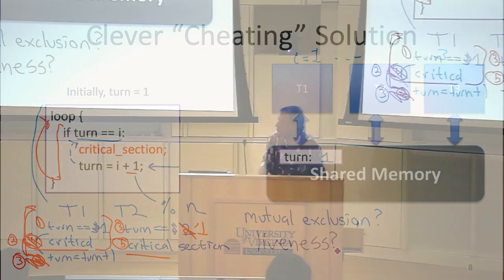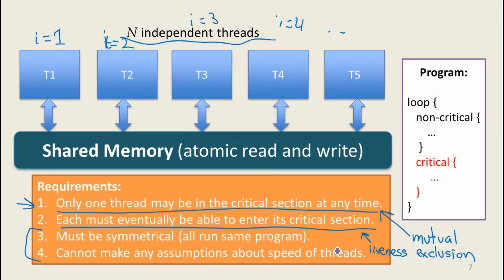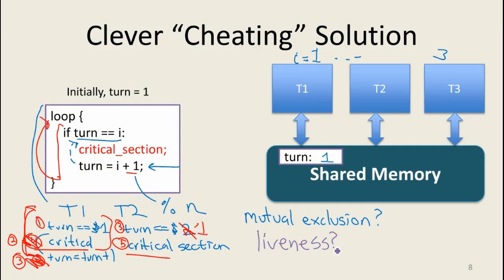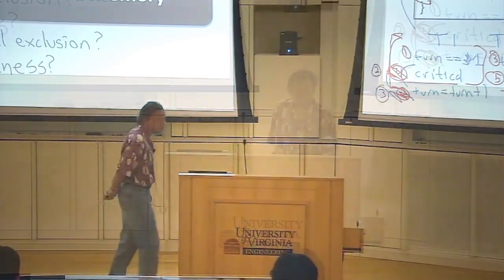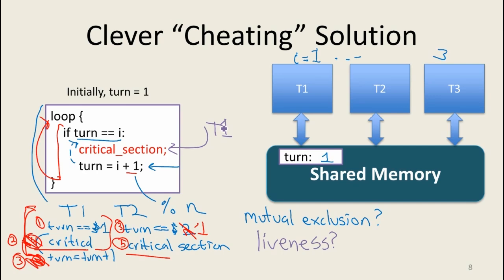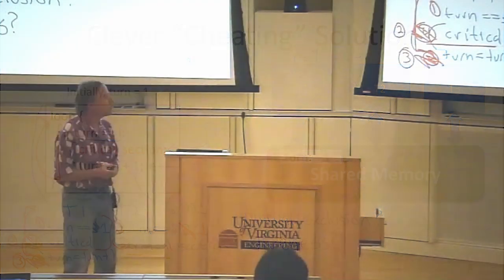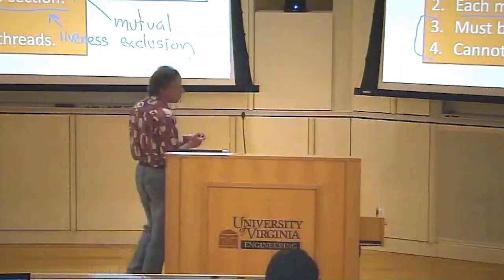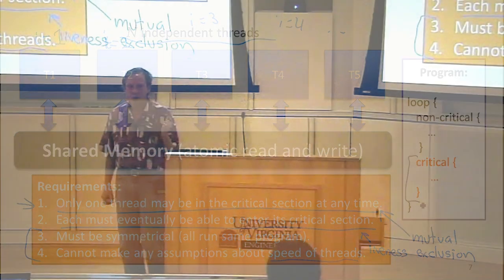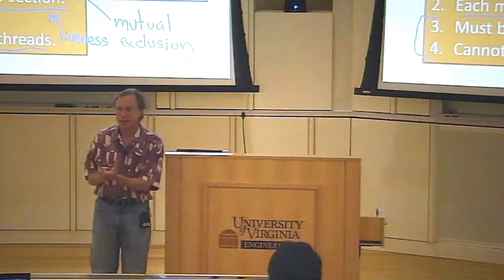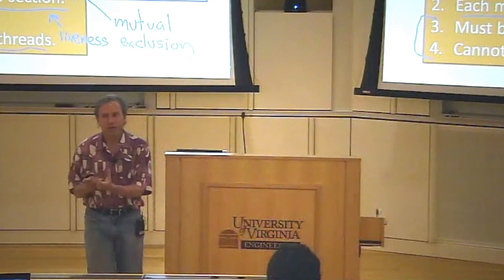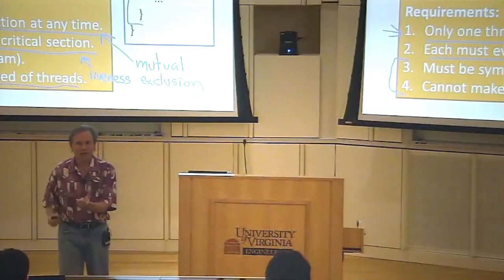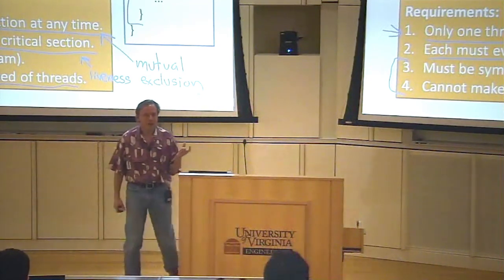Does it provide liveness? Each of the threads must eventually be able to enter its critical section. Are there scenarios where it would not? Is there anything that could prevent thread 2 from entering its critical section? If thread 1 does not finish — if thread 1 gets stuck, maybe it crashes or goes into an infinite loop and never reaches the turn equals i plus 1 statement — then thread 2 is never going to get to run. The way the problem is stated, there's an assumption that threads all eventually make progress. None of them should get stuck in the critical section, and all the solutions we'll look at have this property.